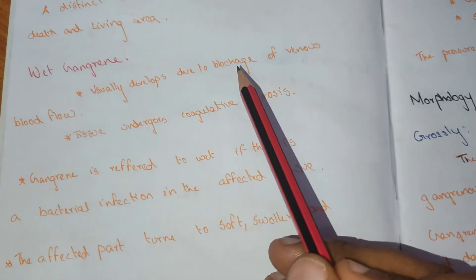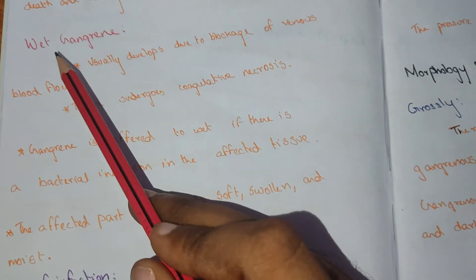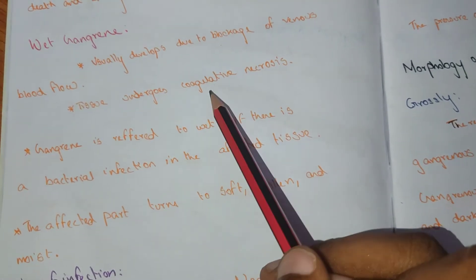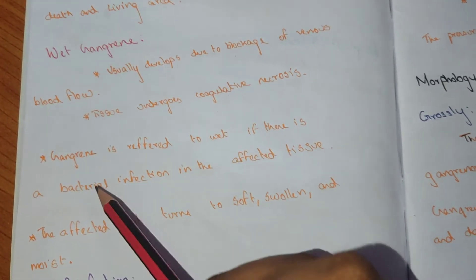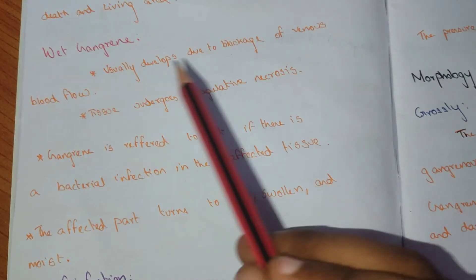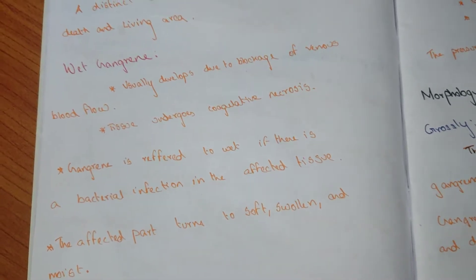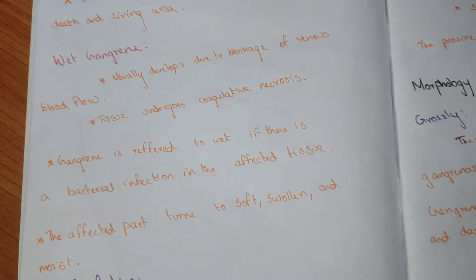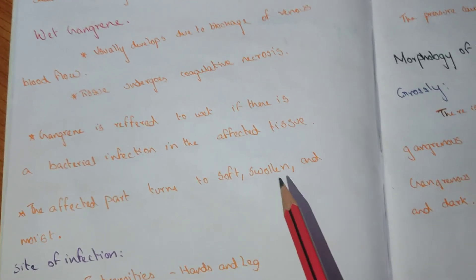Wet gangrene usually develops due to blockage of venous blood flow. The tissue undergoes coagulative necrosis. The gangrene is described as wet when there is a bacterial infection in the affected tissue, and the affected part turns soft, swollen, and moist.